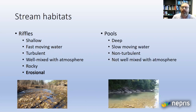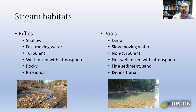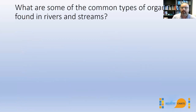Pools, on the other hand, are deep, slow-moving, non-turbulent water and tend not to be well-mixed with the atmosphere, particularly if they're a long distance from a riffle. At the bottom of pools we find fine sediment and sand, which is why we call these depositional habitats. These two contrasting habitats are really important because certain organisms have evolved to utilize them, and their body morphology will reflect the particular habitat they live in.